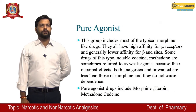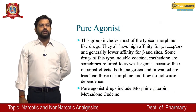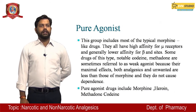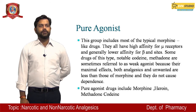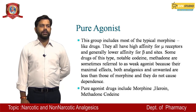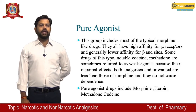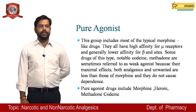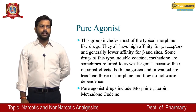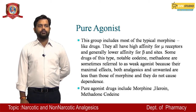Pure agonists: this group includes most of the typical morphine-like drugs. They all have high affinity for mu receptors and generally lower affinity for beta receptors.